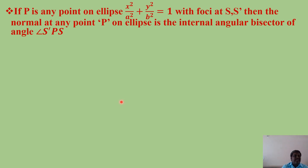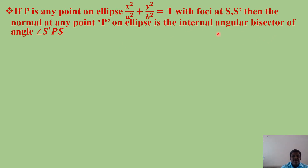If P is any point on the ellipse x²/a² + y²/b² = 1 with foci at S and S', then the normal at any point P on the ellipse is the internal angular bisector of angle S'PS. We already discussed that the tangent at P is the external angular bisector of angle S'PS. Here, the normal at P is the internal angular bisector. The angular bisector is the line which divides the angle between two given lines.